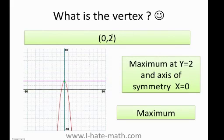So what is my vertex? My vertex is 0, 2. Remember, we said we had a maximum because it was negative. Where does a maximum appear? That is when y is equals 2. The axis of symmetry is x equals 0. That is actually like the line that cuts the parabola in half.